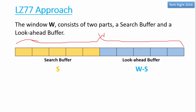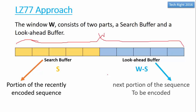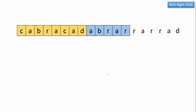The blue color part is the look-ahead buffer. The whole window length is W, so the look-ahead buffer length is W minus S. The look-ahead buffer is the next portion of the sequence to be encoded.